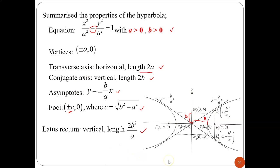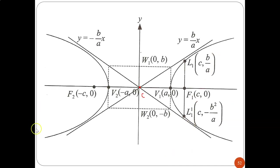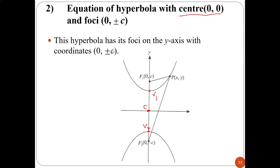This is the larger view for Case 1 — hyperbola on the X-axis with center (0, 0). You can see the latus rectum, and the asymptotes — which always come in pairs: one positive slope and one negative slope.